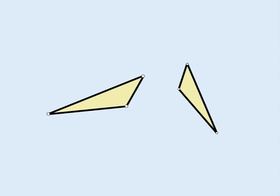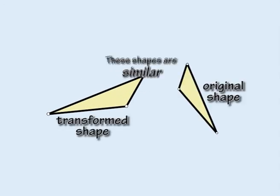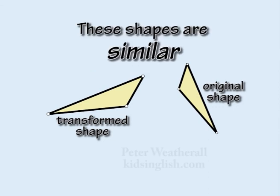If one shape can be transformed into another by rotation, reflection, translation and resizing, then the shapes are said to be similar.